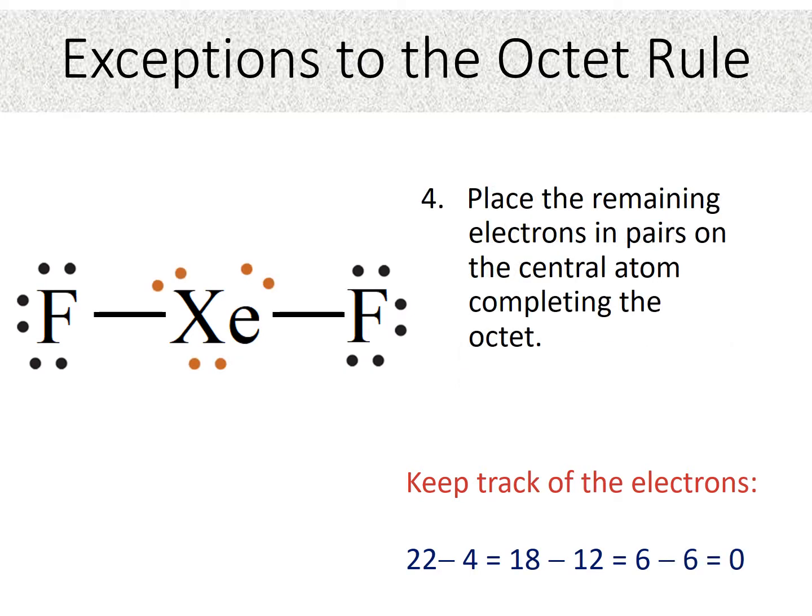And, of course, leftover electrons go on the central atom. So we would put six electrons in pairs around xenon. And that gives us how many around xenon now? Well, let's count. Two, four, six, eight, ten electrons around xenon.